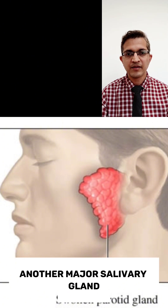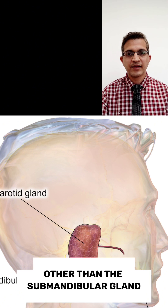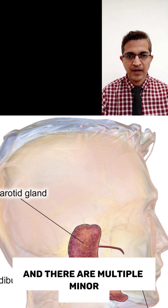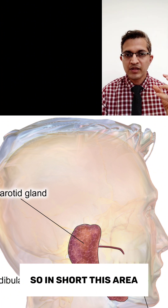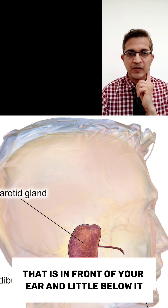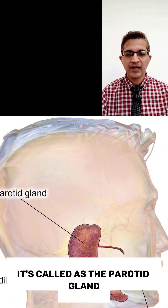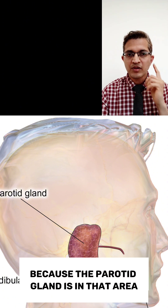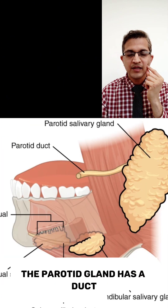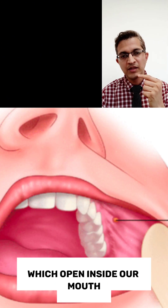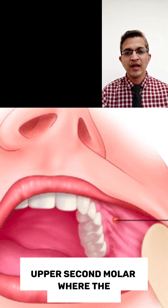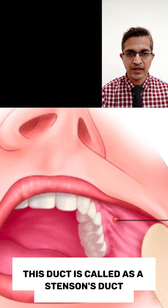The parotid gland is another major salivary gland, alongside the submandibular gland, sublingual gland, and multiple minor salivary glands. This area in front of your ear and a little below it is called the parotid region because the parotid gland is located there. The parotid gland has a duct which opens inside our mouth above the upper second molar. This duct is called Stensen's duct.